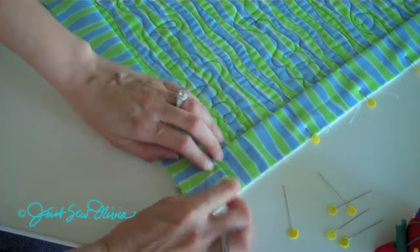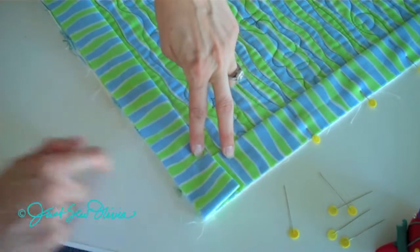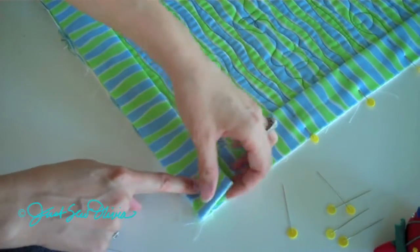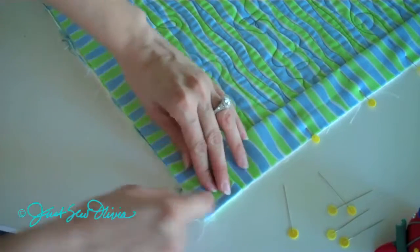When you do that, it will look like you've got one strip of binding laying on top of another strip of binding, when in fact it's really one continuous piece.